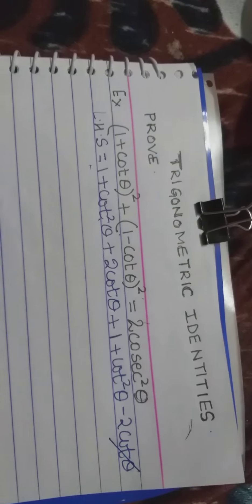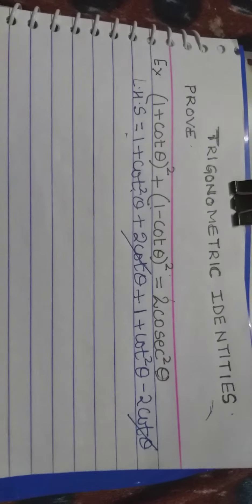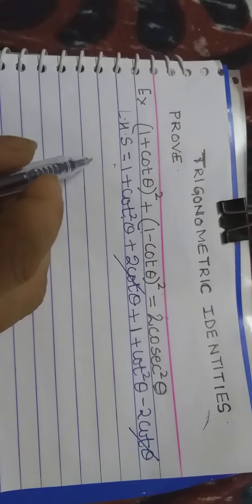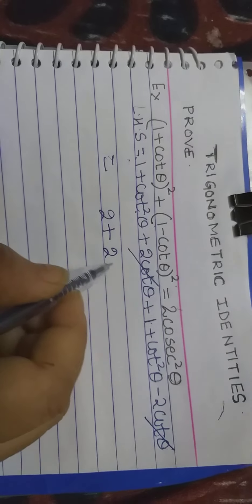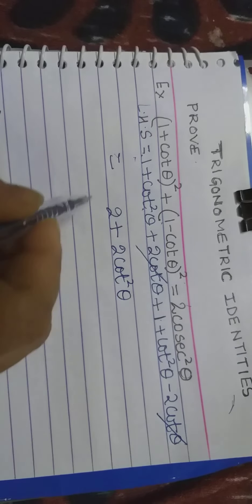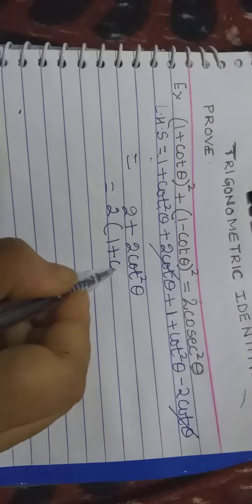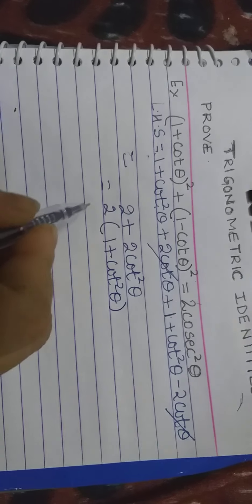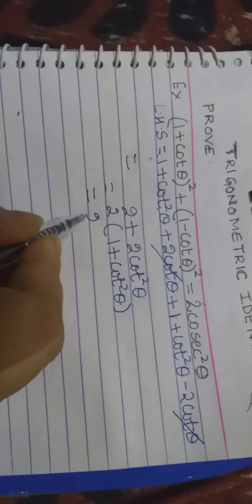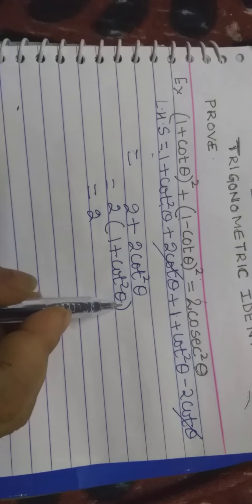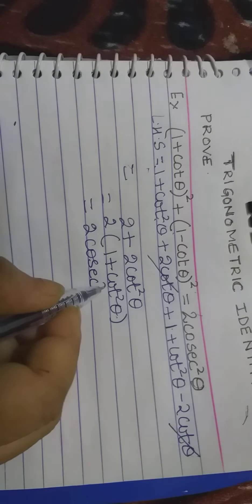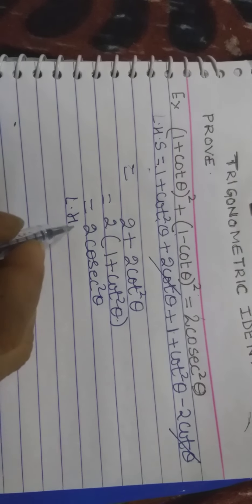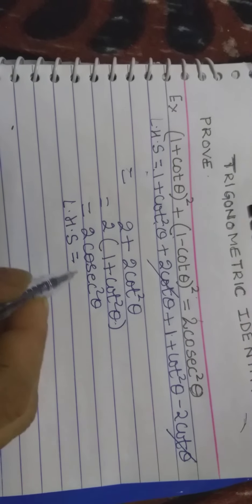Now minus 2 cot theta and plus 2 cot theta will cancel. So 1 plus 1 is 2, giving 2 plus 2 cot square theta. Take 2 common, so it will be 2 times 1 plus cot square theta. And what is 1 plus cot square theta? It is cosec square theta. So left hand side equals right hand side.